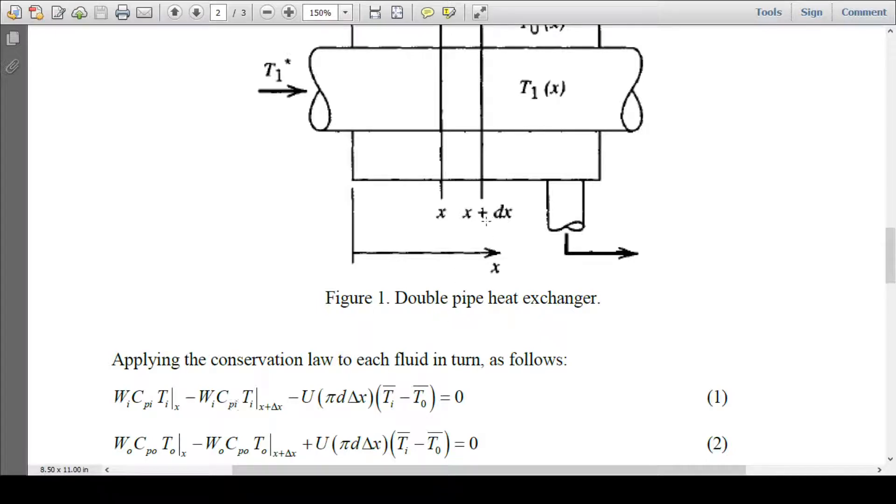Energy going out from here is WI CPI TI x plus delta x. This much energy, U times I bar minus T not bar, would be removed by the cold water.